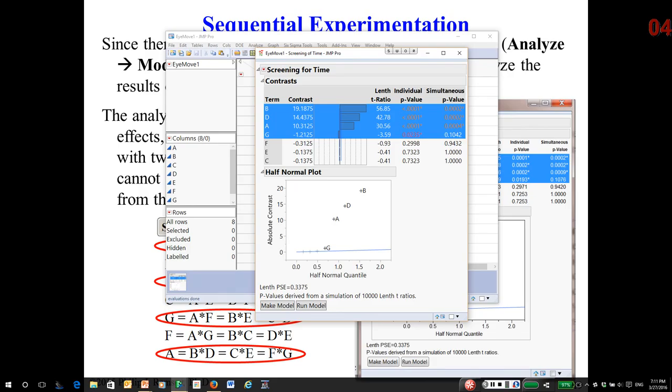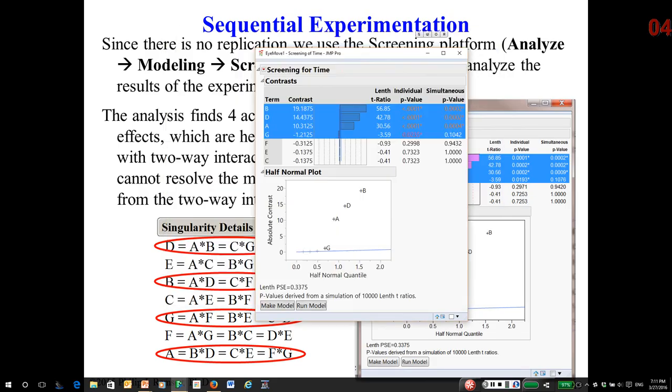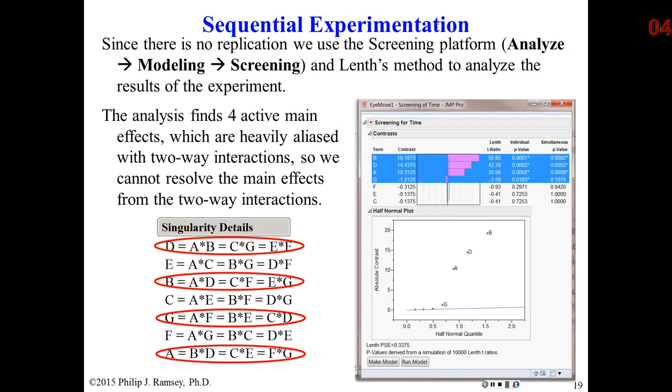But take a look at the alias chain. So, D is aliased with three two-way interactions that could involve A, G, E, and F. B likewise, G likewise, and A likewise. In other words, I have no idea what's going on. These could be main effects. They could be two-way interactions, and probably some combination of both.